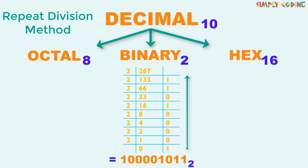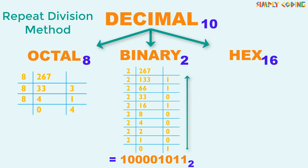Similarly, if we are converting decimal to octal, we will use repeat division by 8. We divide the number by 8 and note down the quotient and remainder, and continue to divide the quotient by 8 until the quotient is less than 8. The sequence of remainders starting from bottom up is the octal equivalent of 267 in decimal, which is 413.